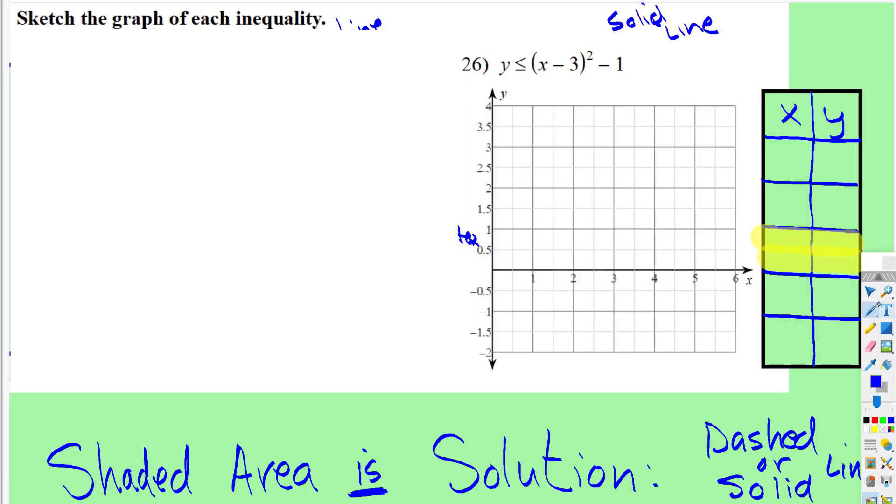Remember what I said about the vertex. For the x value, you use the opposite, so the opposite of negative 3 is positive 3. This says we go down 1, so if we normally would have started here, we now shift over 3, down 1.